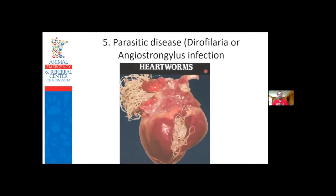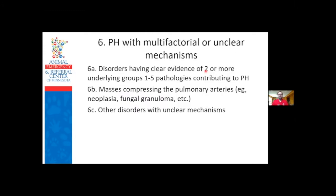Class 5 is parasitic disease - heartworm, something we see in Minnesota, especially with some southern transplant dogs. Class 6 is pulmonary hypertension from multiple causes, and also includes masses partially blocking the pulmonary arteries. I've had a few dogs with heart-based masses or chemodectomas that are either invading or compressing the pulmonary artery, causing a backup of pressure, increased pressure load on the heart, and right-sided heart failure - those would be classified as class 6.